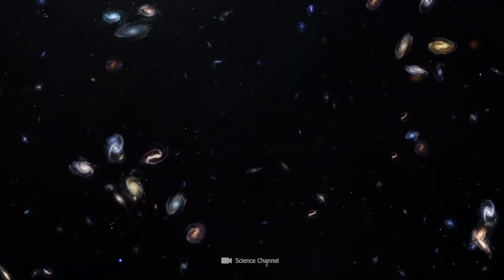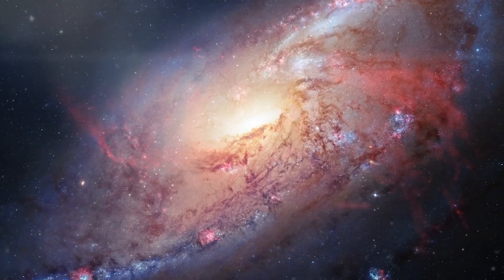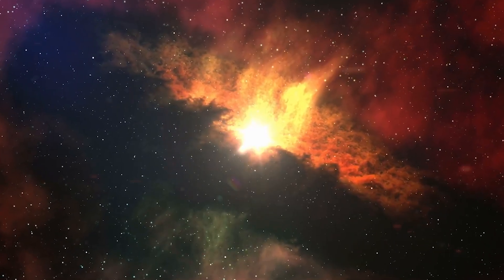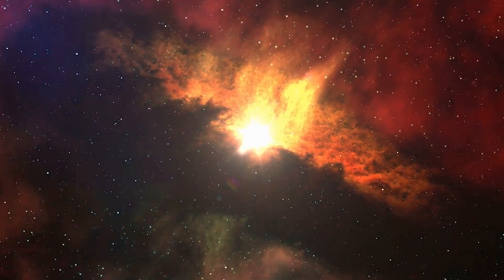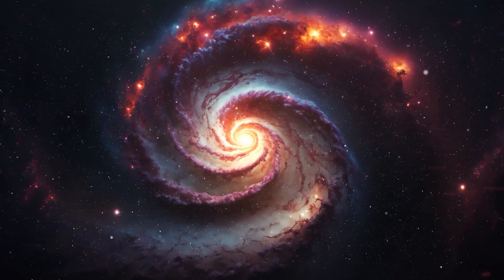In the modern universe, galaxies predominantly assume two basic forms: featureless, rounded clouds known as ellipticals and flat, wispy disks like our Milky Way. Evidently, these earliest newborn galaxies did not begin their cosmic journey in such familiar shapes.